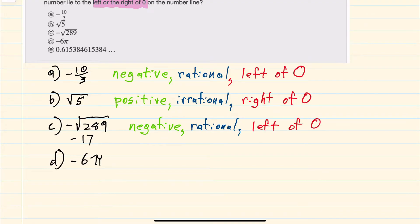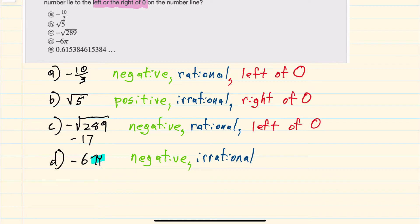For D we have negative 6π, so this is negative. Since it has π as a part of it, this will be irrational — any expression that includes π will be irrational. And again, since it's negative, it would be to the left of 0.